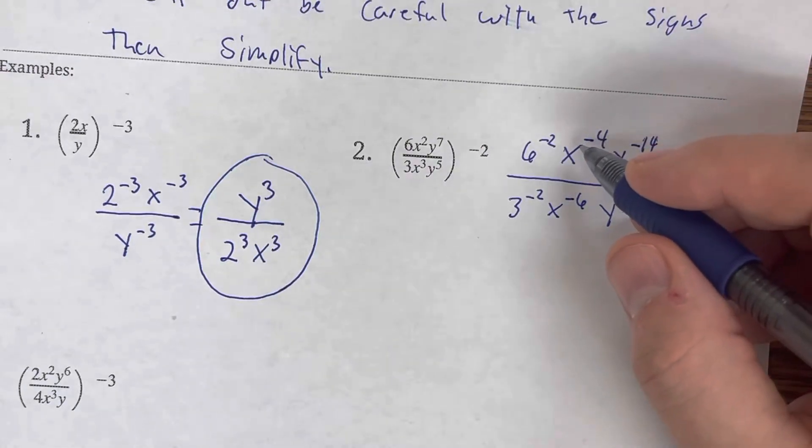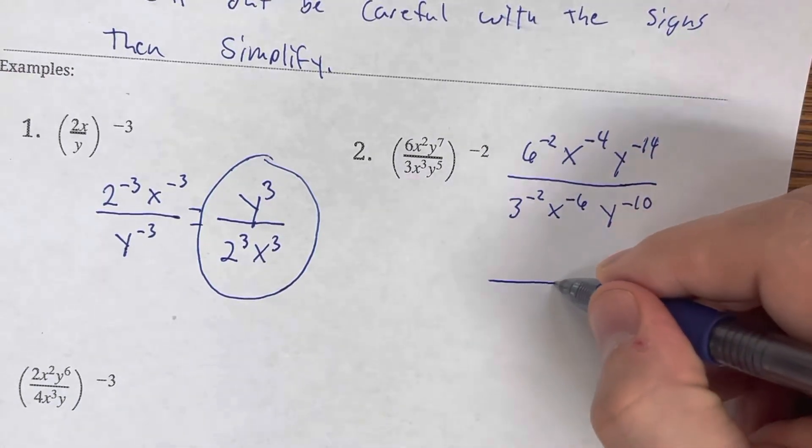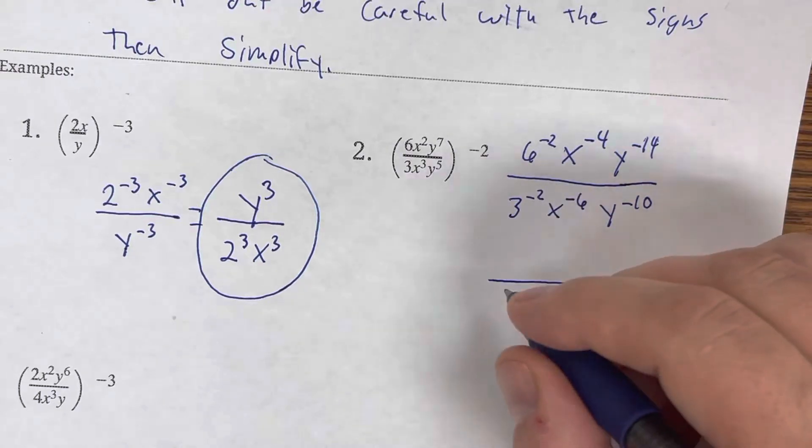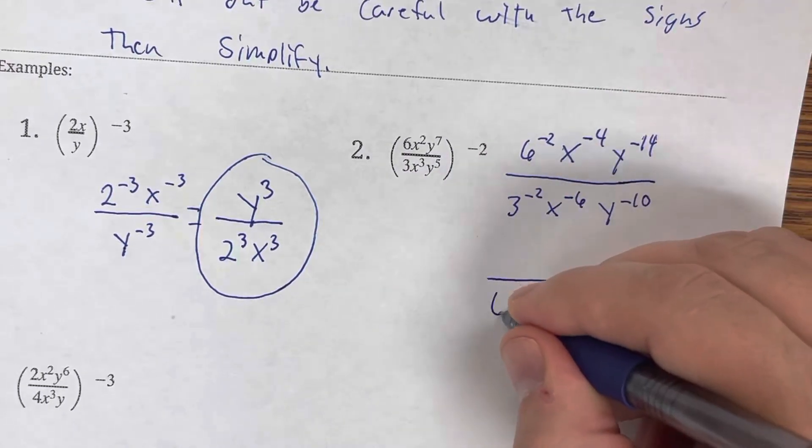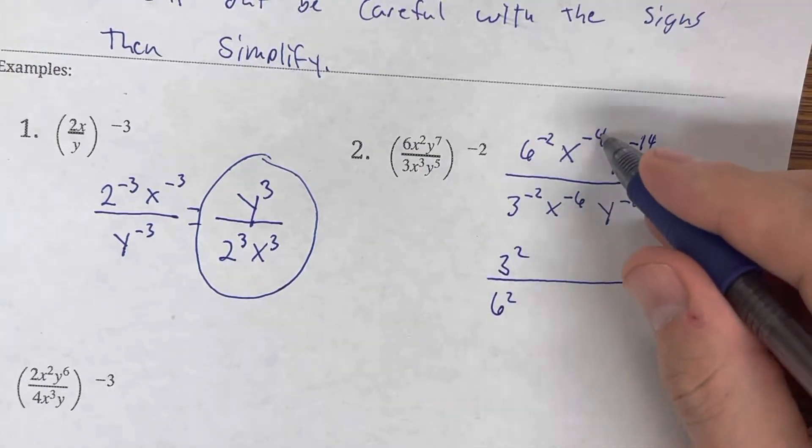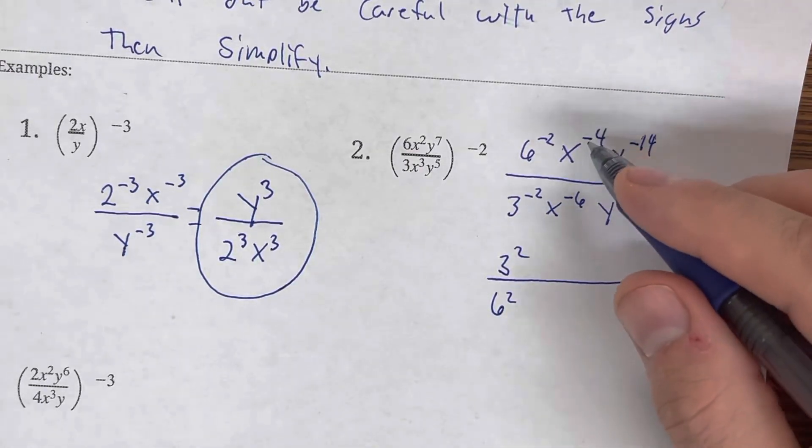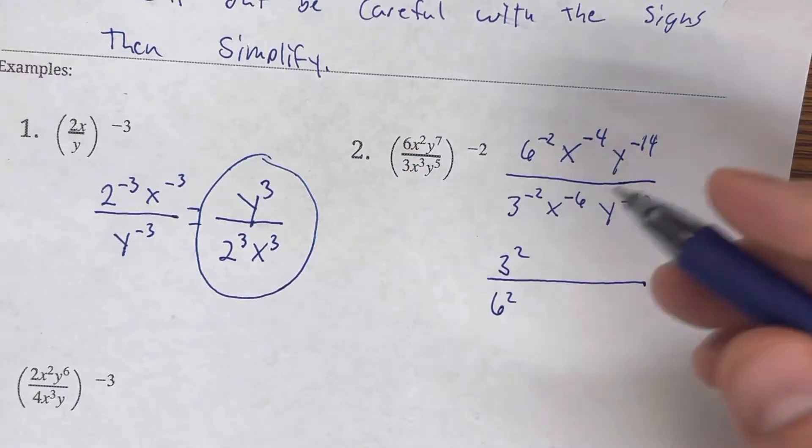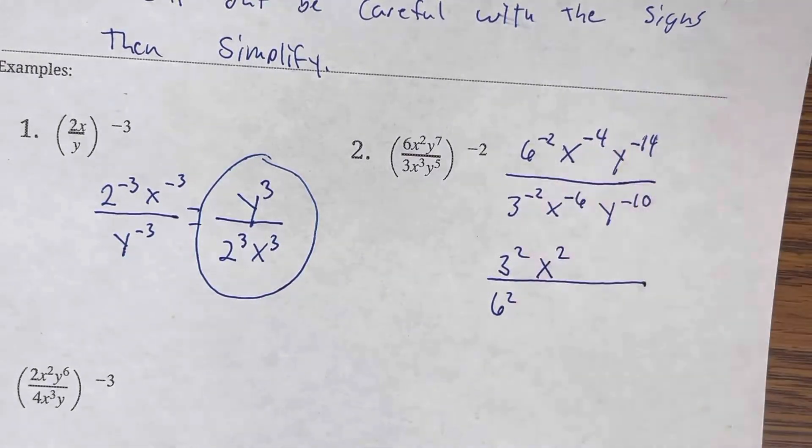Now, in this one first, we are going to make our fraction. I can move the 6 downstairs, 6 squared, 3 upstairs. But now with these, we need to subtract. Negative 4 minus negative 6 is positive 2. So, x squared is on top.